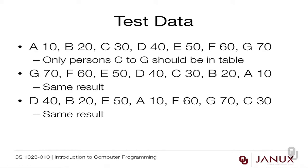First we need to think about what our test data is going to be. Player A might get 10 points, B 20, C 30, D 40, E 50, F 60, and G 70. Then only players C through G should be in our table, in reverse order. We could also put the data in opposite order, or try some random order like D40, B20, E50, A10. That should be a good test of our program.